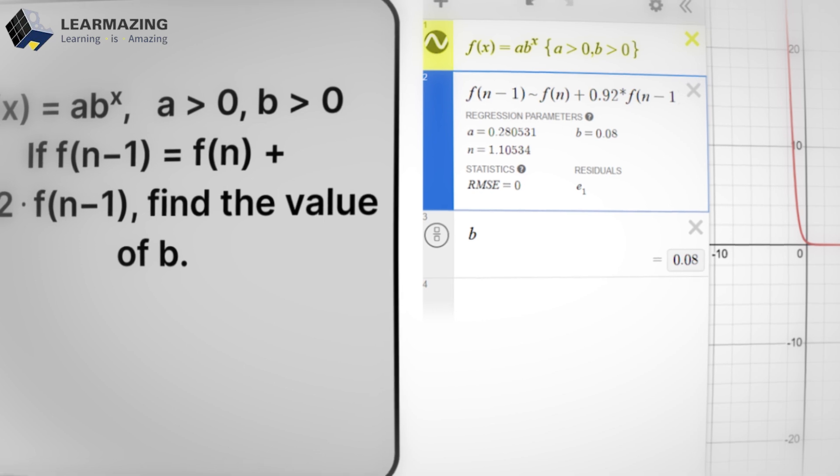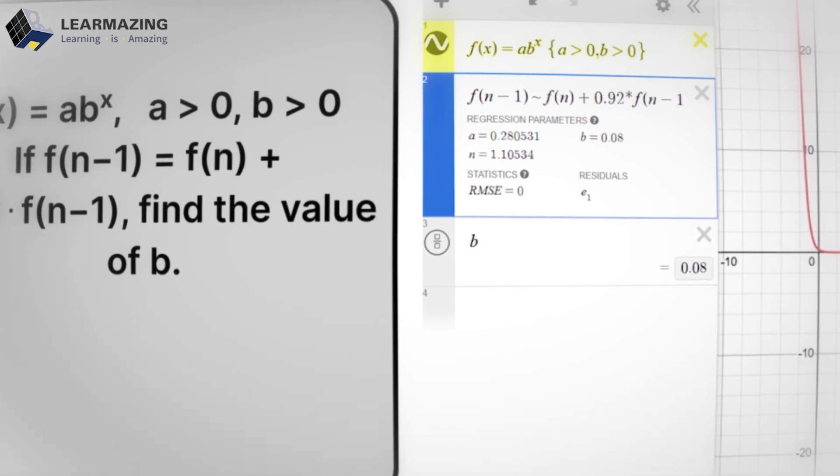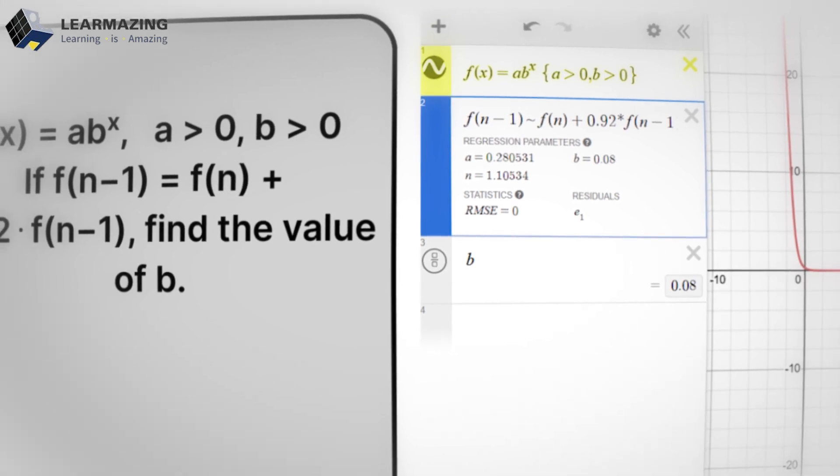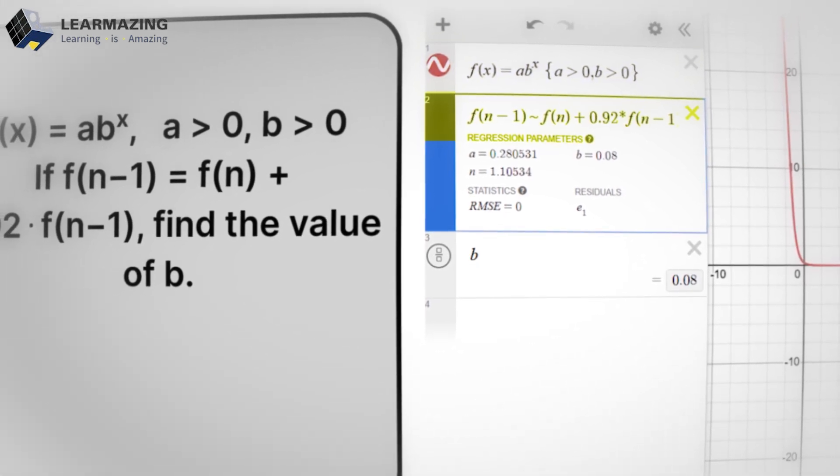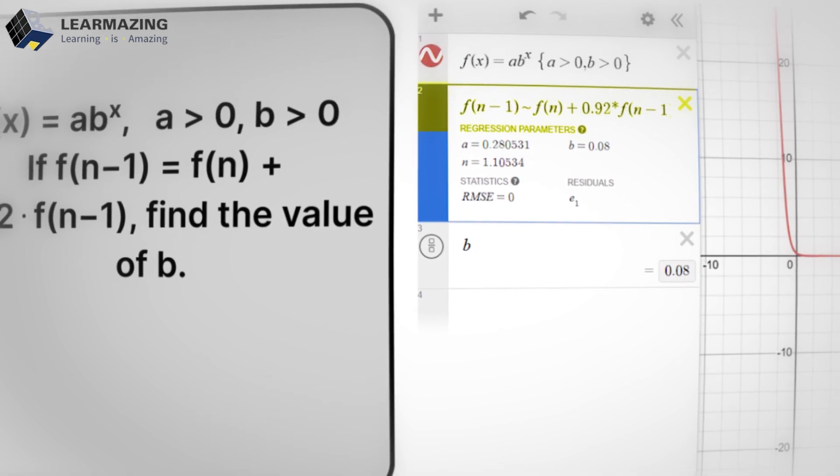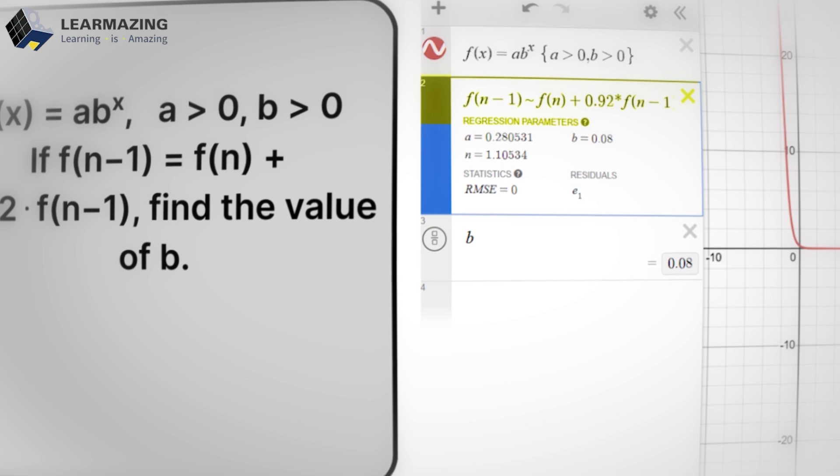Here's the trick. Desmos isn't just for graphing. It can solve equations automatically. Step 1 inputs the function like this. f(x) = ab^x where a > 0 and b > 0. f(n-1) = f(n) + 0.92 × f(n-1).